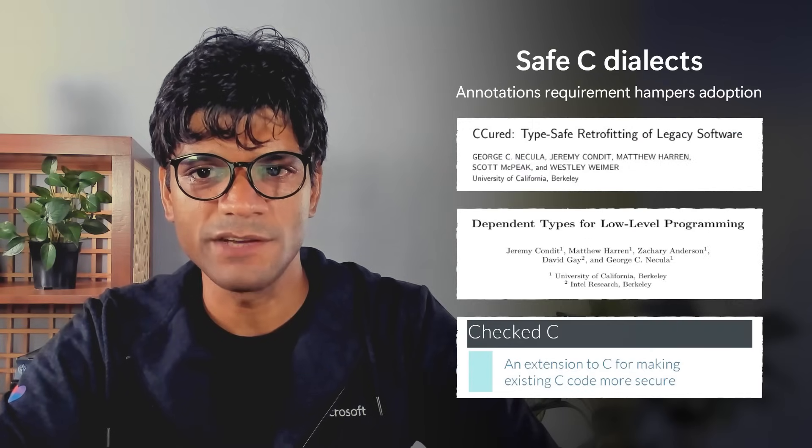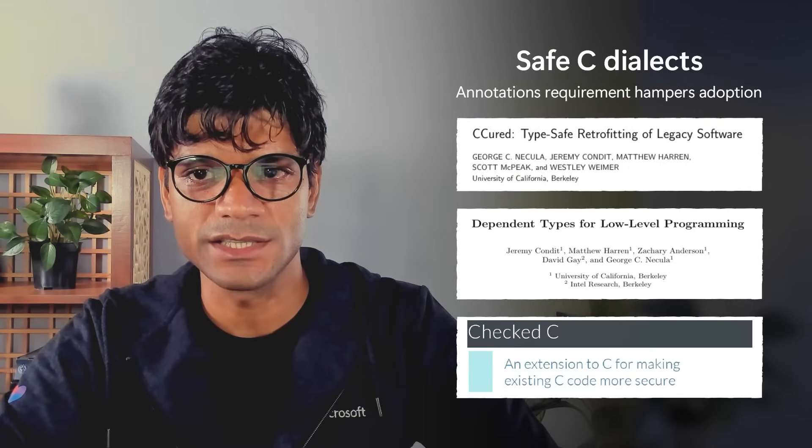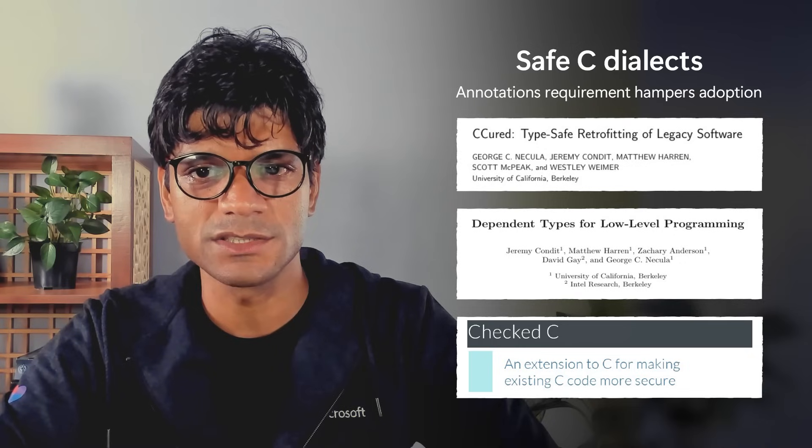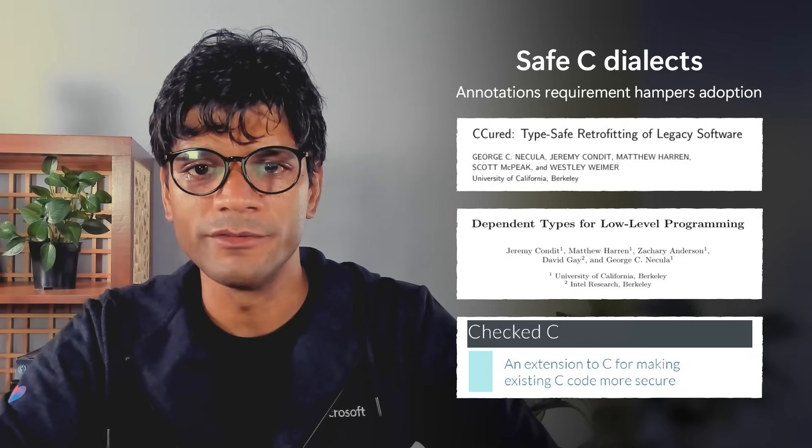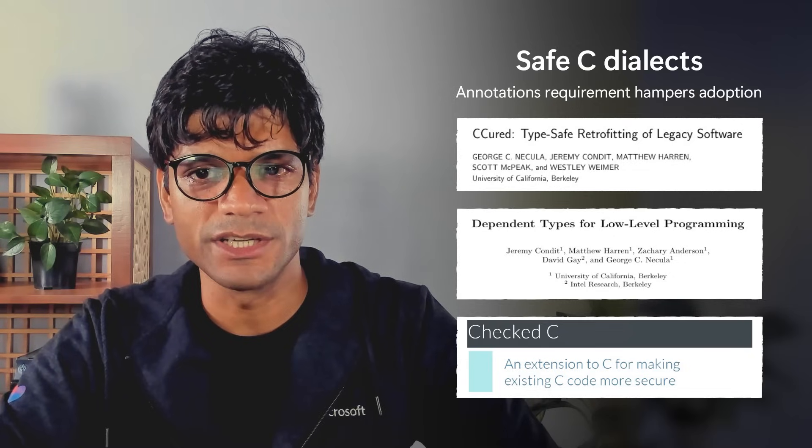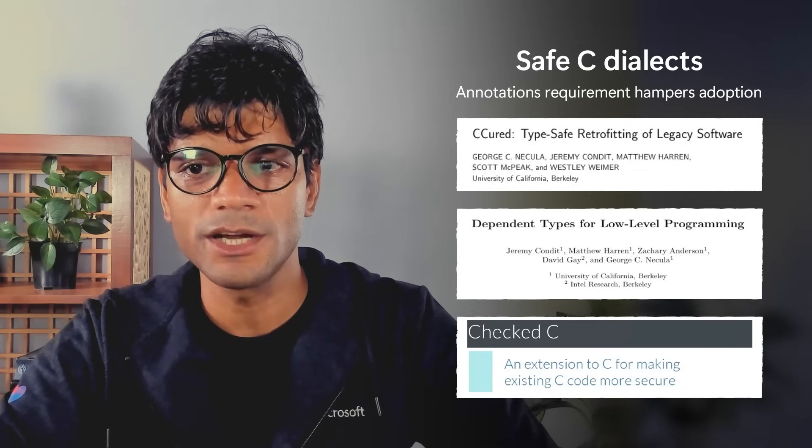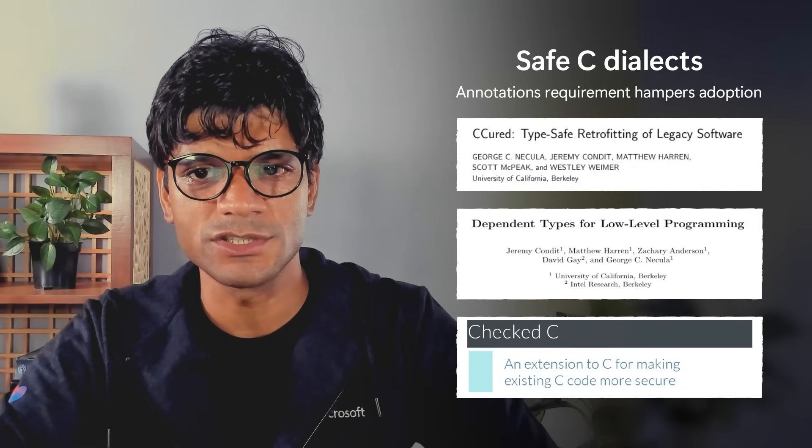Researchers have proposed safe dialects of C, for example Check C, that with the help of additional source-level annotations, provide memory safety guarantees with low-performance overheads. However, the cost of adding these annotations and the code restructuring required to enable them becomes a bottleneck in the adoption of these tools.